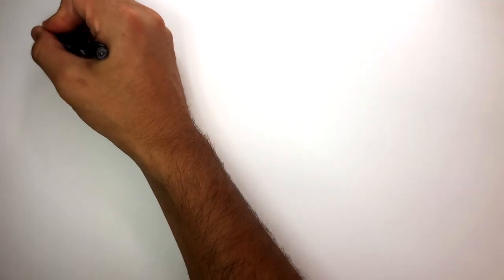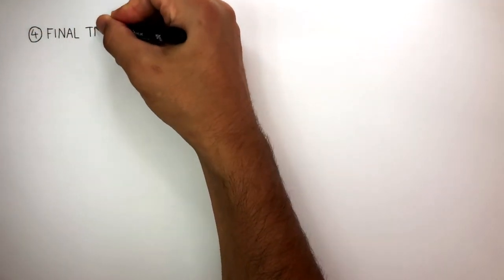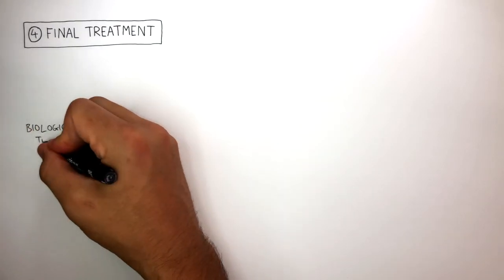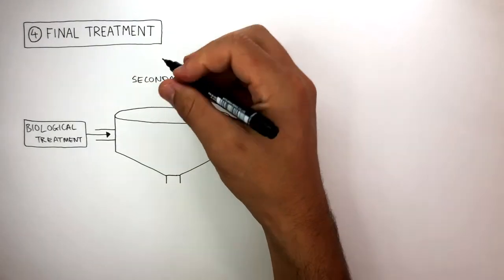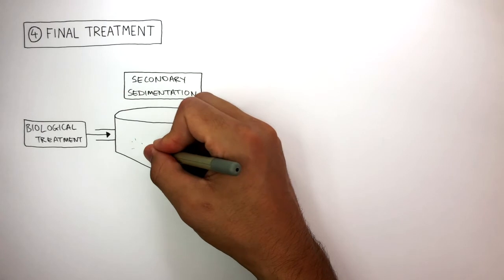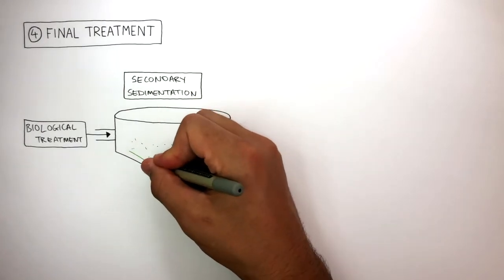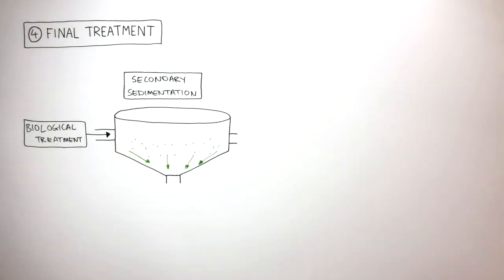The fourth and final step is the final treatment. The wastewater flows from biological treatment into this tank where secondary sedimentation takes place as the useful bacteria settle to the bottom. This is the second time sediment has been allowed to settle out, so it's called secondary sedimentation.